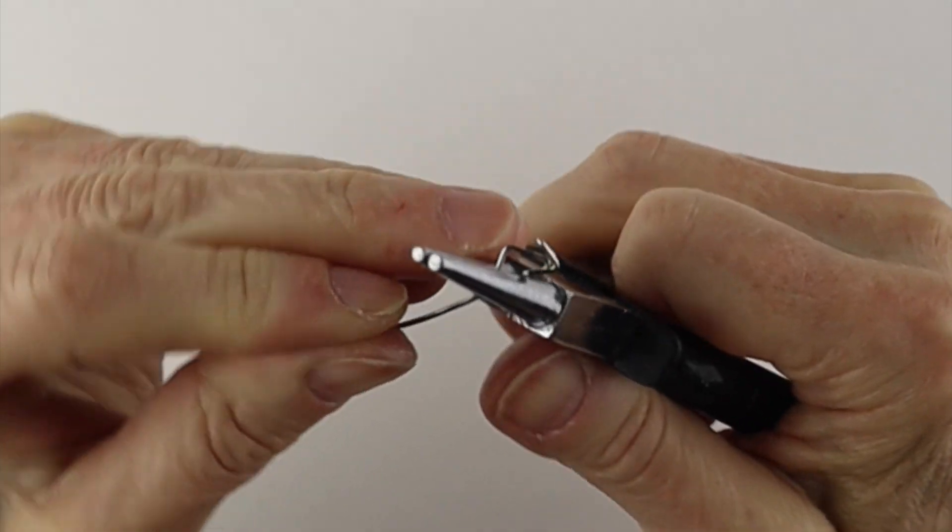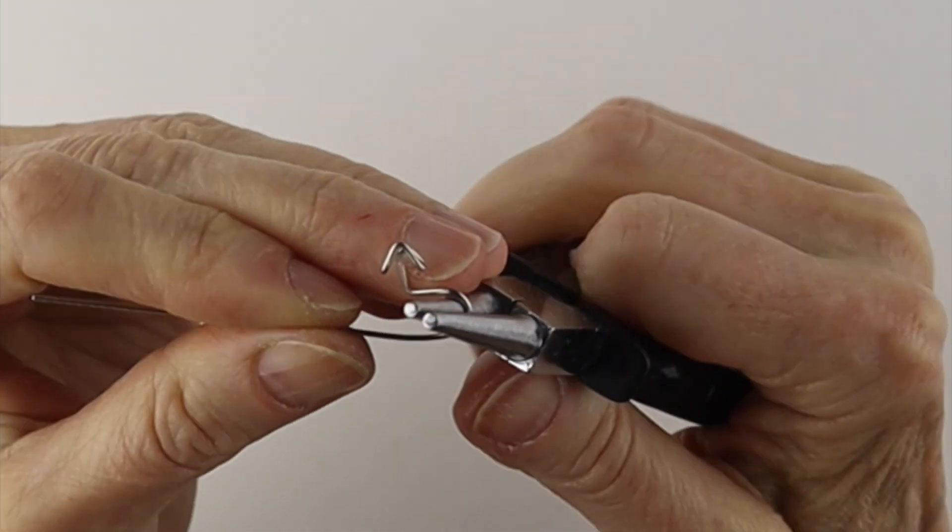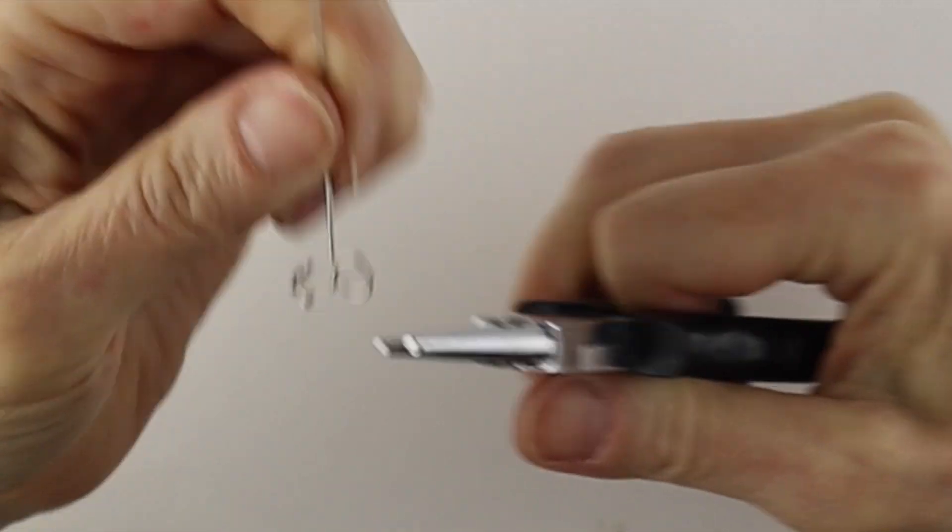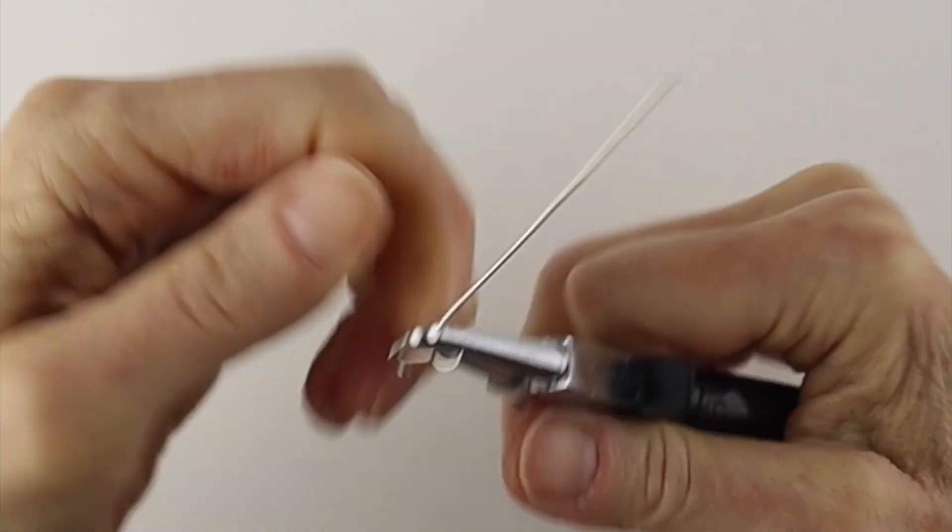Now, take your round pliers and form the circle. You might have to hold that and rotate it to center the circle. Make it a little smaller if you need.